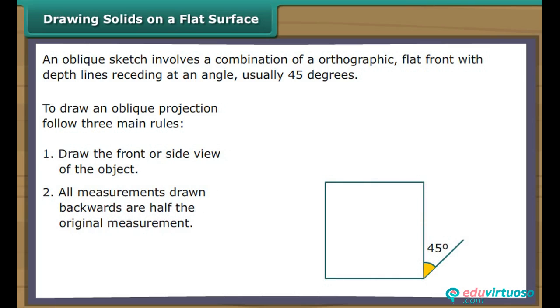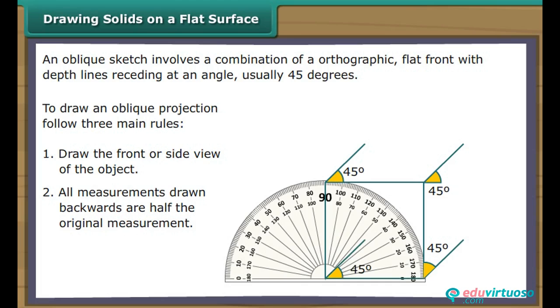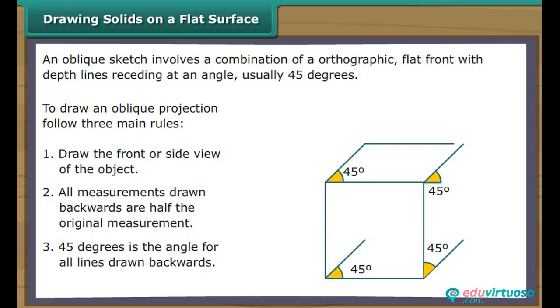Two, all measurements drawn backwards are half the original measurement. Three, 45 degrees is the angle for all lines drawn backwards.